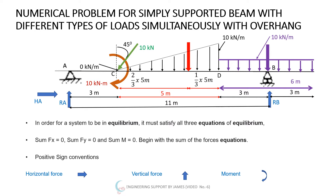The inclined load acts at 3 meters from support A. Then there is a uniformly varying load (triangular load) of 10 kilo-newton per meter at B, reducing to 0 kN/m at C. Next is a concentrated moment of 10 kilo-newton meter acting at node C, which is 3 meters from A. Finally, there is a uniformly distributed load of 10 kilo-newton per meter acting from D to the end of the overhang — a distance of 3 meters.